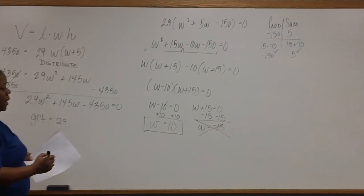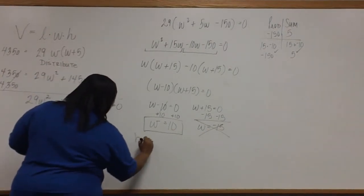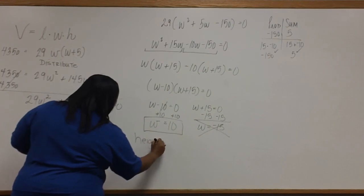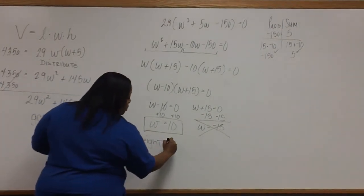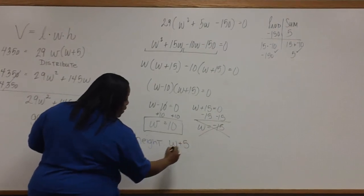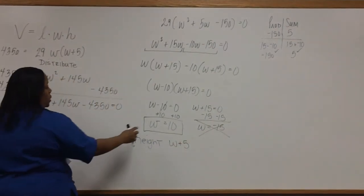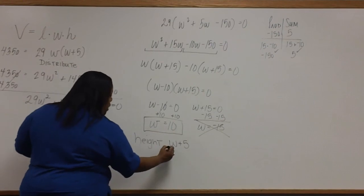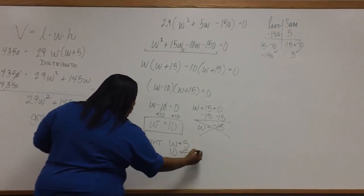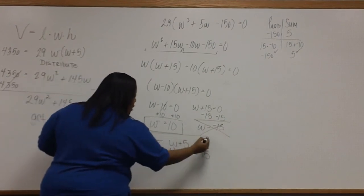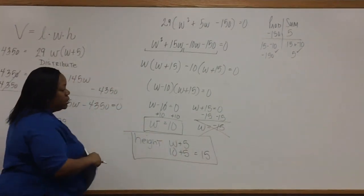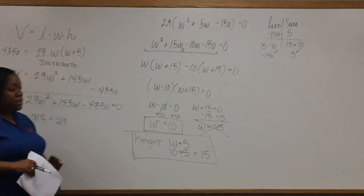But we still need to find the height. Remember that we found that the height, the expression for the height is represented by W plus 5. Since W is equal to 10, we have 10 plus 5, which is 15. So the height is equal to 15 inches. And the width is equal to 10 inches.